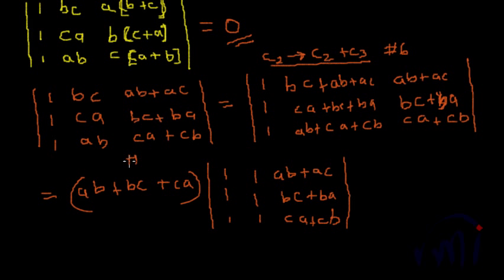Now look at this determinant. Two columns have equal values, equal elements. So this becomes actually AB plus AC plus BC into 0, which is equal to 0. Hence, the problem is solved.